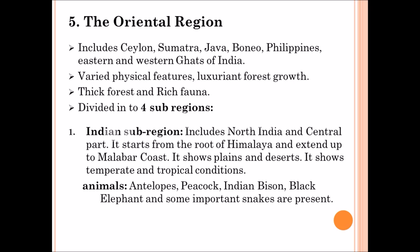The fifth region is the Oriental region. It includes Ceylon, Sumatra, Java, Borneo, Philippines, and the eastern and western Ghats of India. It has varied physical features and contains luxuriant, very thick forest growth and very rich fauna species. It is divided into four sub-regions. The first is the Indian sub-region, which includes North and Central India, starting from the Himalayas to the Malabar Coast region. It contains both temperate and tropical conditions. Animals like antelopes, peacock, Indian bison, and black bear are common in this area.